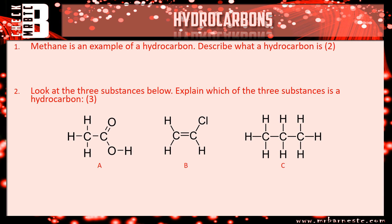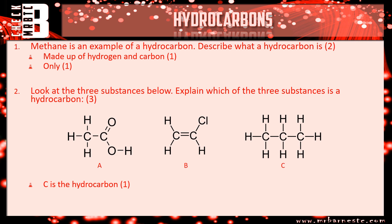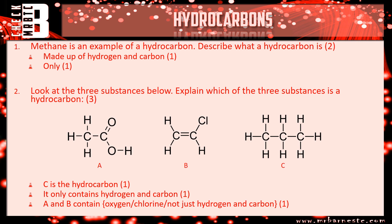Let's look at the answers. Question one: a hydrocarbon is made up of hydrogen and carbon — that's one mark — and hydrogen and carbon only — that's the second mark. For question two, the answer is substance C. You get one mark for identifying C, a second mark for explaining it's the only one made up of hydrogen and carbon only, and a third mark for explaining that A and B are not hydrocarbons because they contain oxygen, chlorine, or other elements beyond just hydrogen and carbon.